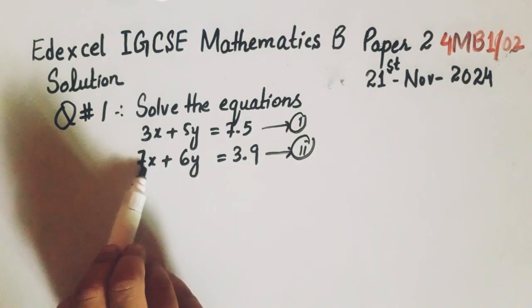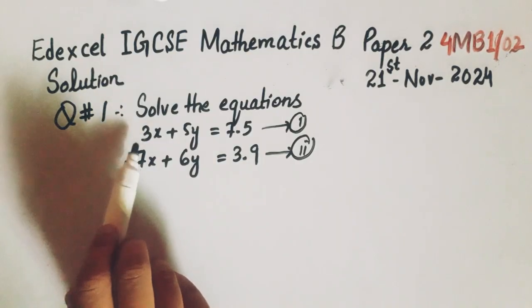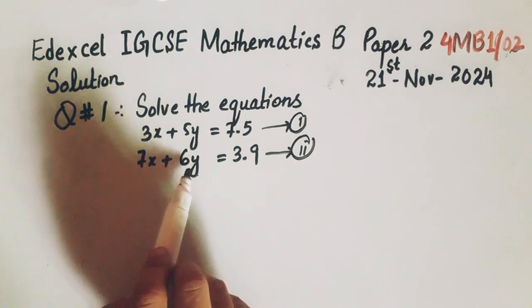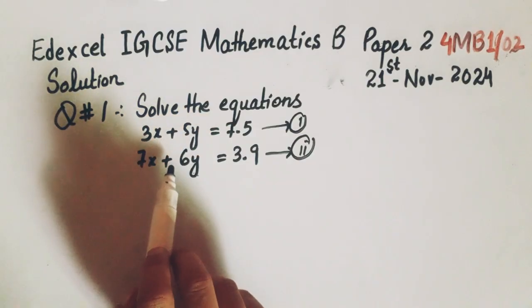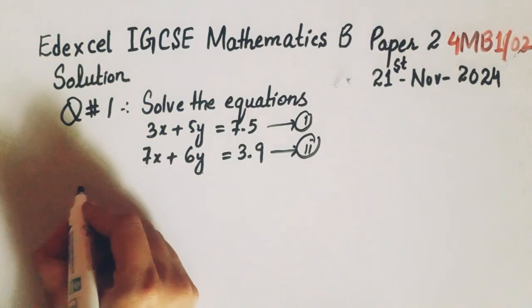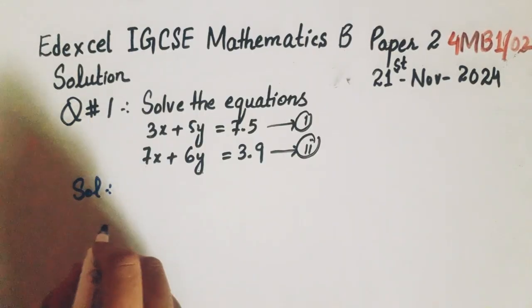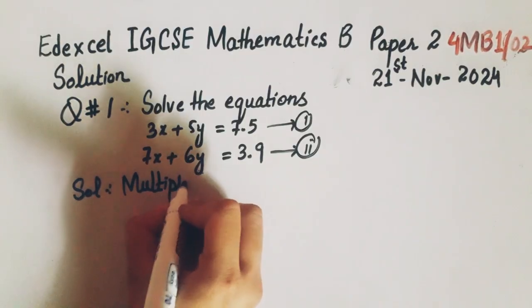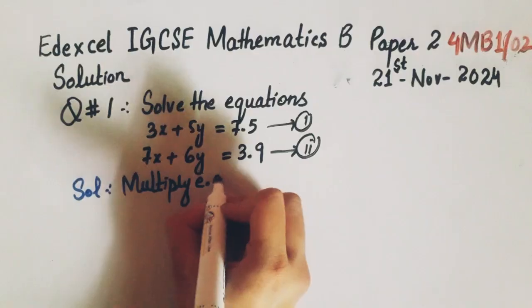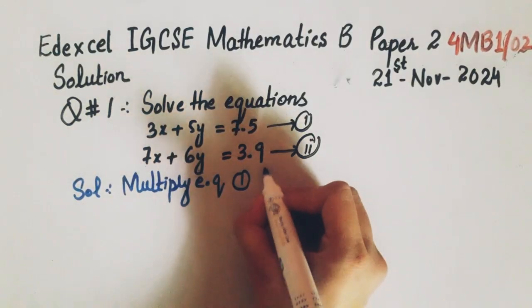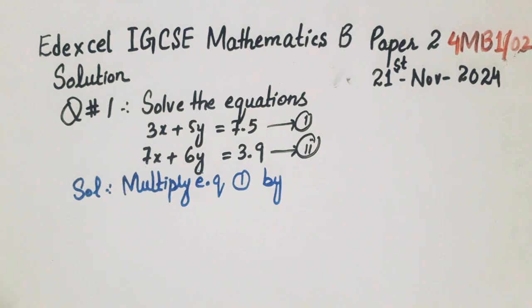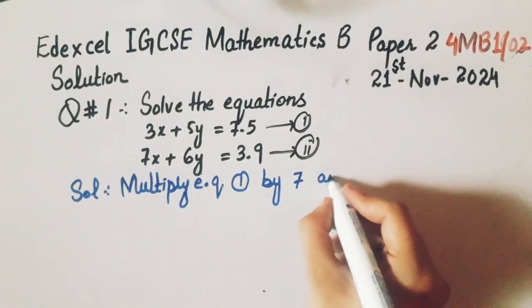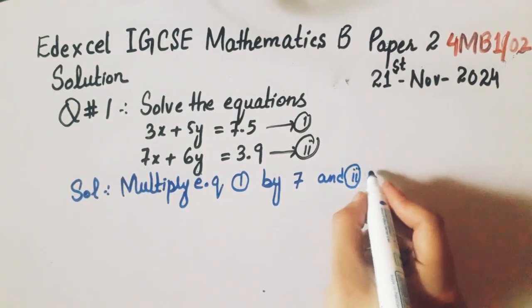It will become 21x. This will also become 21x. Then subtract 1 and 2. After subtraction, we will eliminate x and get the value of y. Then substitute the value of y in any one equation to get the value of x. Now we will solve this as multiply equation 1 by 7 and equation 2 by 3.